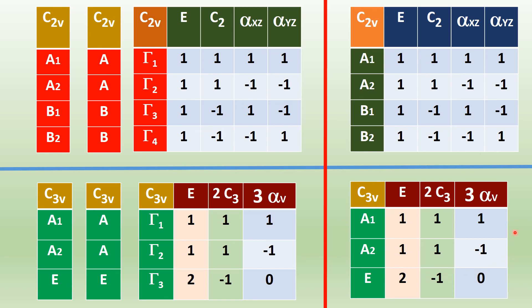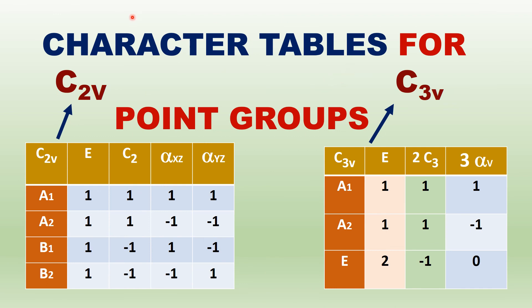This is the character table for C3V in Mulligan notation, as typically found in textbooks. This is the overall character table with all values known for C2V and C3V point groups — for water and ammonia. In the next class, we will study about Mulligan notation in more detail: instead of Gamma 1, Gamma 2, Gamma 3, we use A, B, E, etc. Thank you for watching.